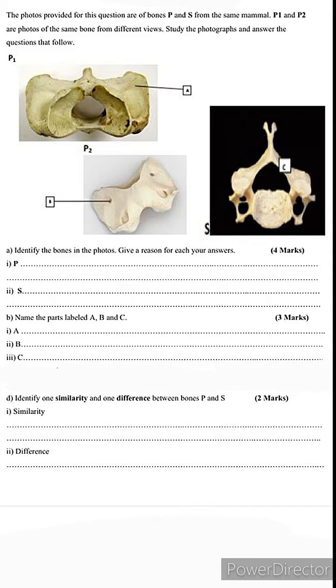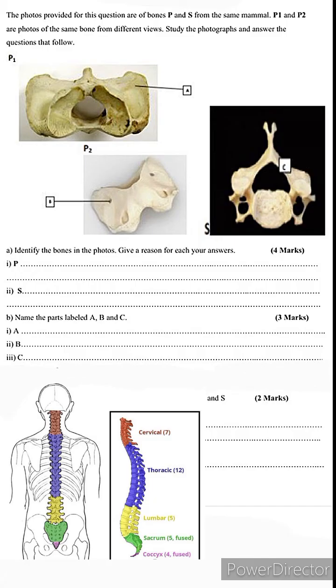Whenever you have vertebrae and you're supposed to identify which vertebrae it is, the first thing you should ask yourself is: which type of vertebrae is this? There are five types according to the region where they're located. We have cervical vertebrae found in the neck region, thoracic in the chest region, lumbar in the lower back, and then we have the sacral and caudal.